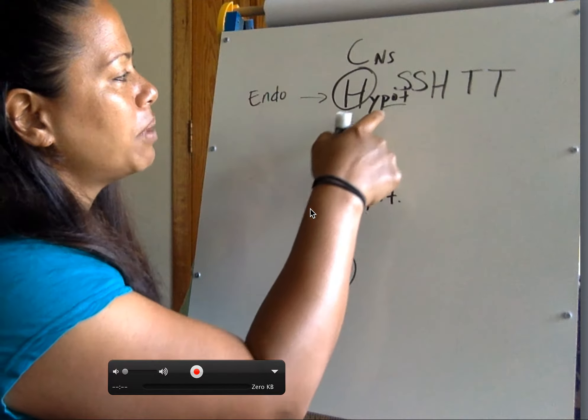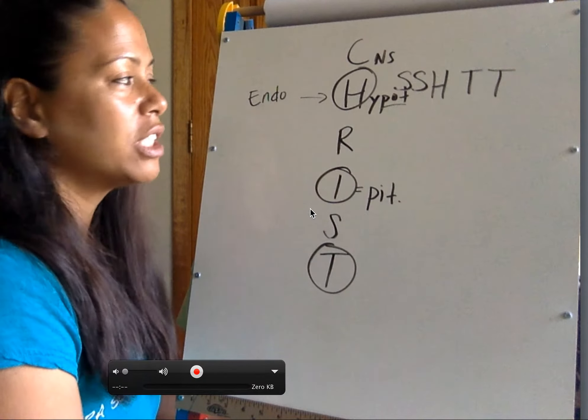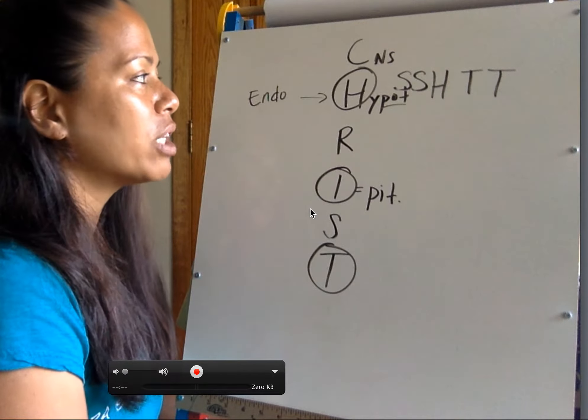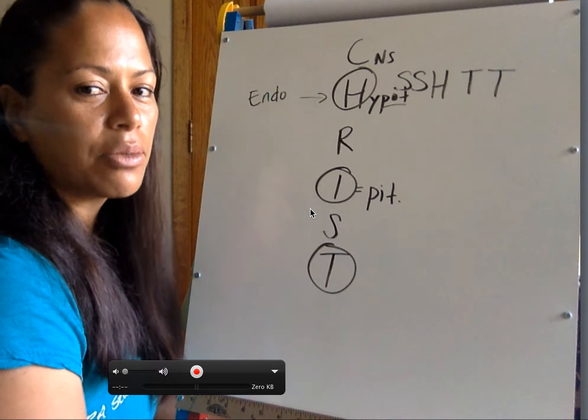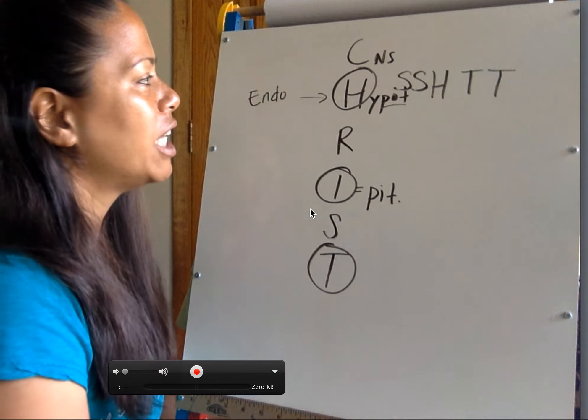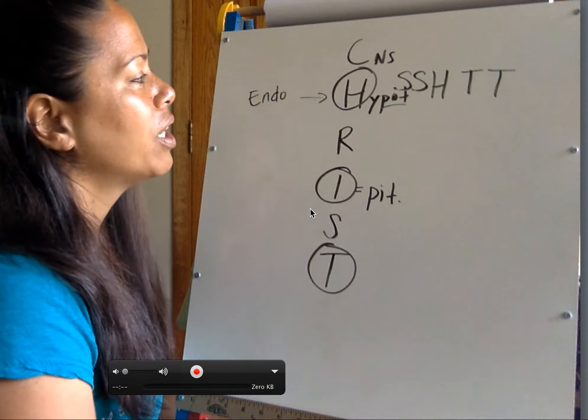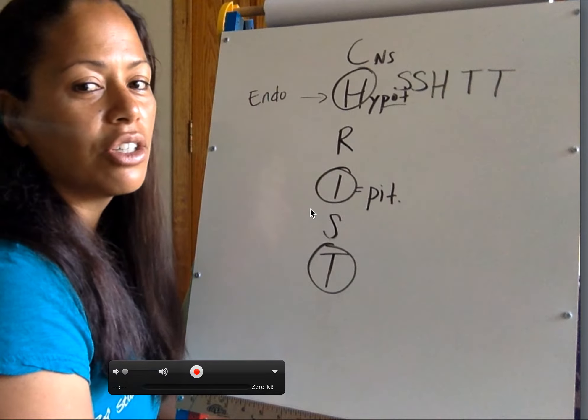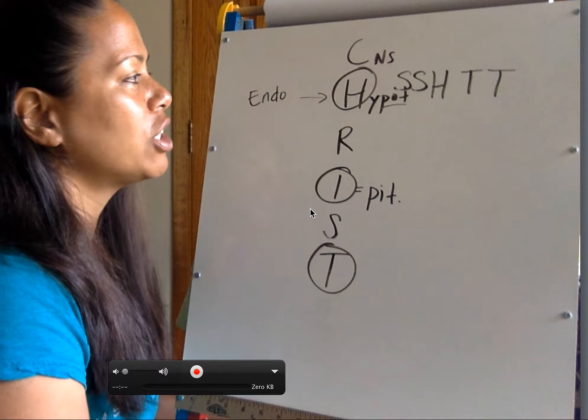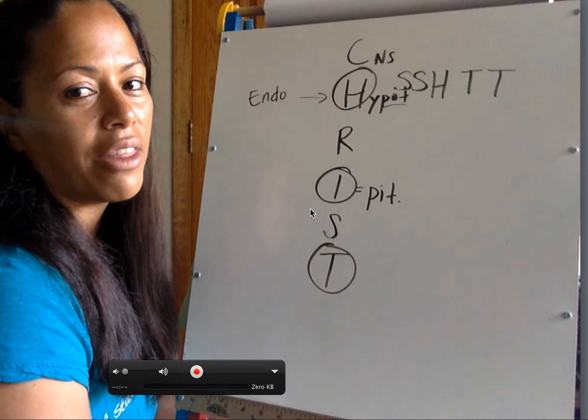So the hypothalamus has five major functions that I'm going to test you on. There's more than that, but for the purpose of class, we're just going to stick with these five, in addition to the hormones that you're going to learn. So sleep, sex, hunger, thirst, and temperature regulation are five functions of the hypothalamus.